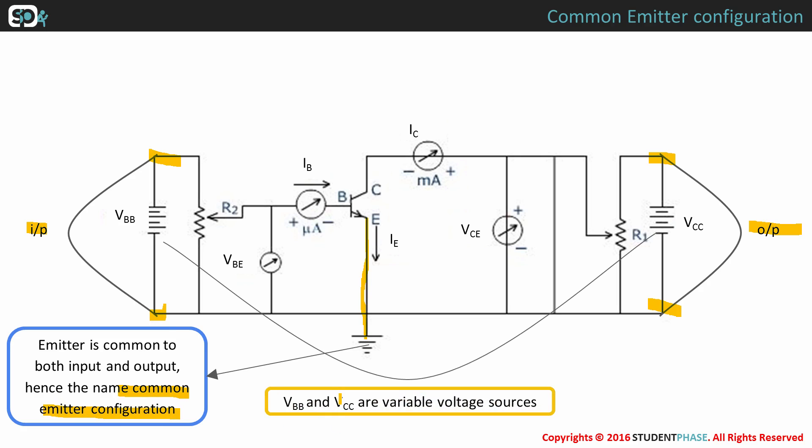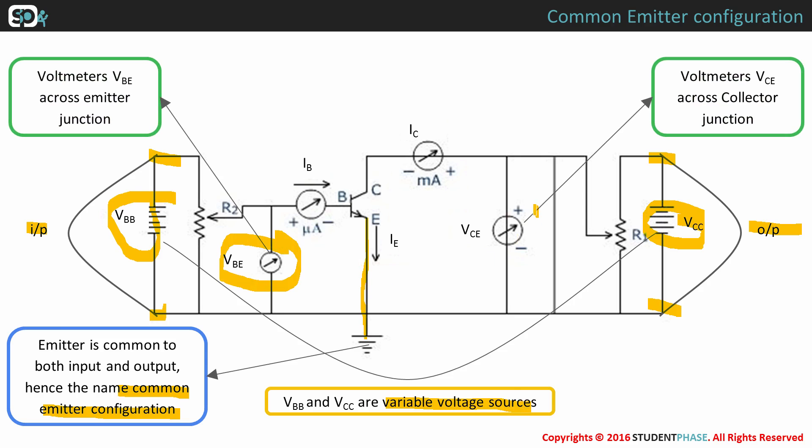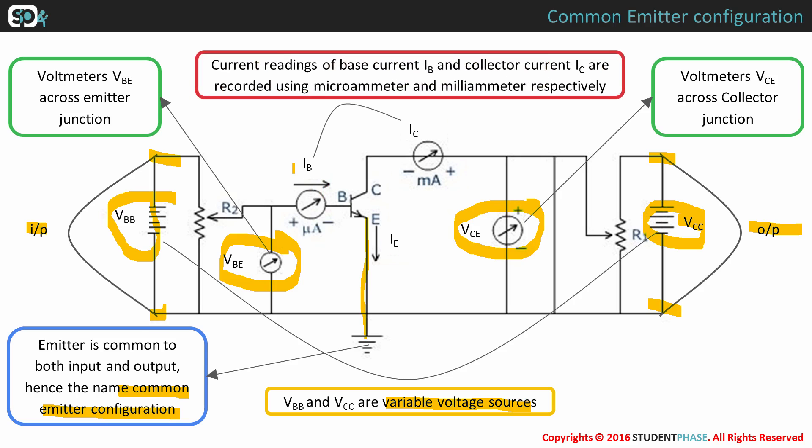VBB and VCC are variable voltage sources. The voltage readings are recorded using voltmeters VBE and VCE between base emitter and collector emitter, respectively, as shown in the figure. Current readings of base current and collector current are recorded using microammeter and milliammeter, as shown here. So, this is a basic setup of transistor in common emitter configuration.